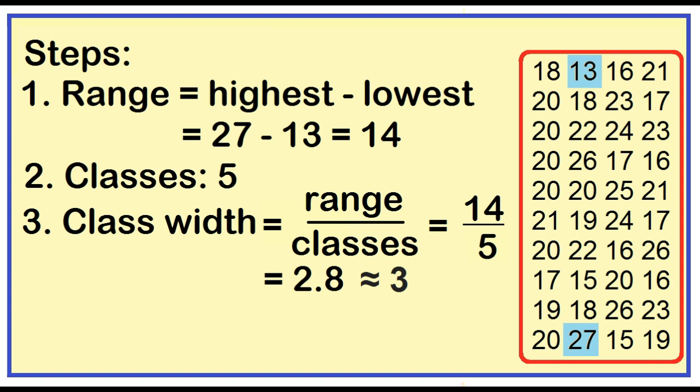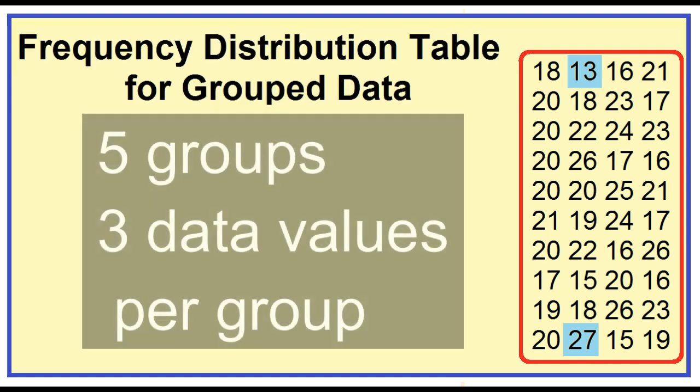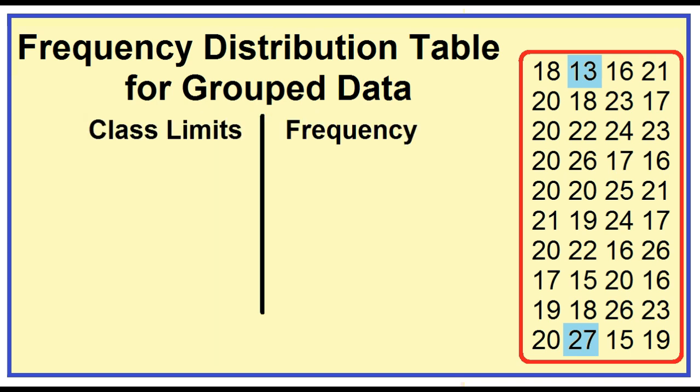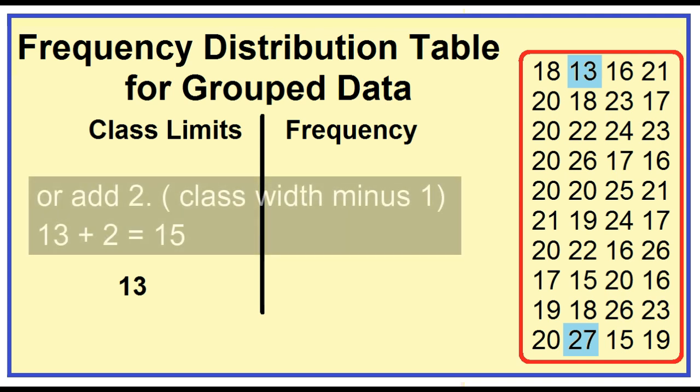Don't forget to round up. Our goal here is to divide the data into 5 groups or classes, each containing 3 numbers. Our starting point is the lowest age, which is 13. Remember that our class width is 3, meaning there are 3 numbers in each group. Let's count: 13, 14, 15. Our first class is 13 to 15.